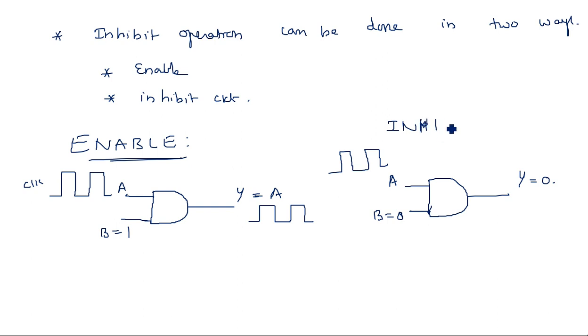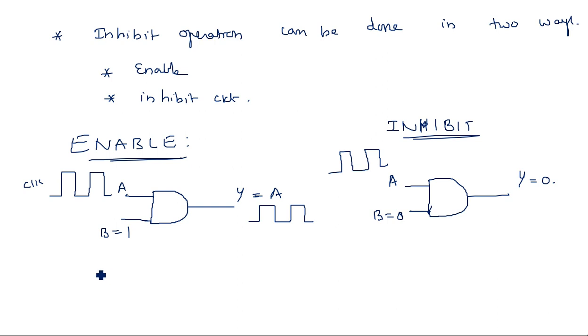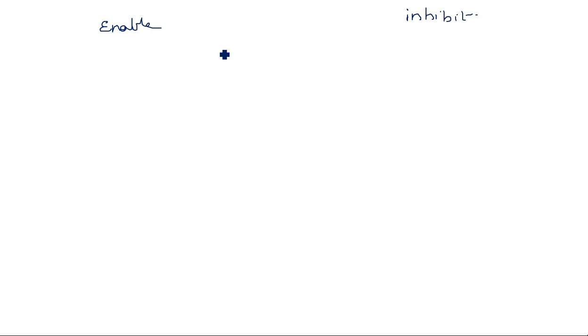In inhibit operation we will get output as either a constant zero or constant one. In enable operation, the circuit is enabled and the output equals one of the inputs or its complement. Let us compare enable on the left and inhibit on the right for the next gates.